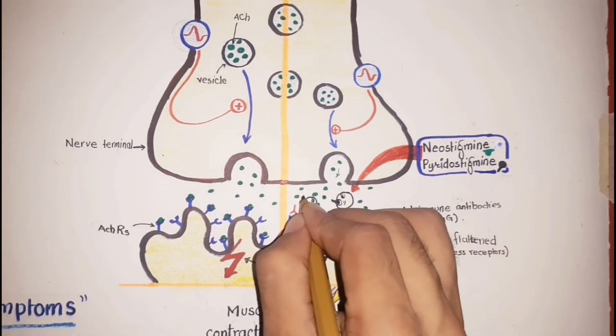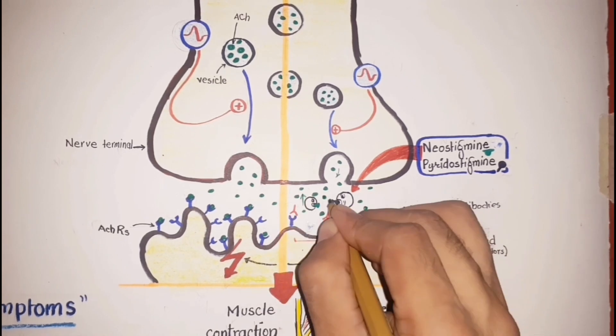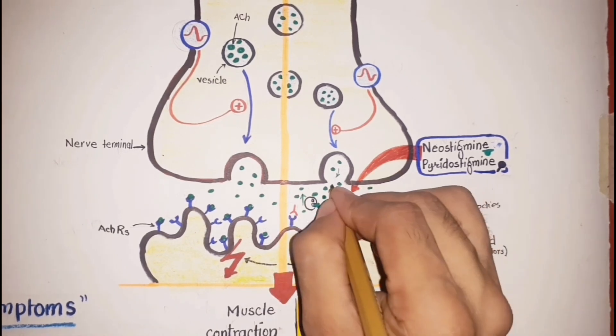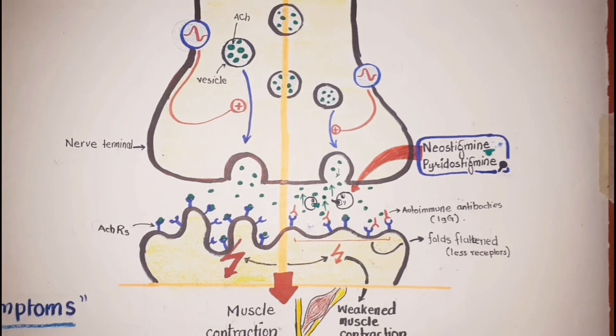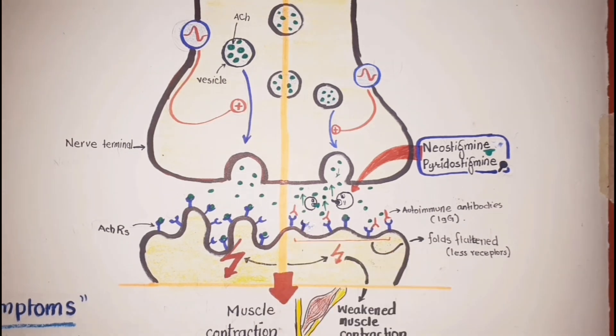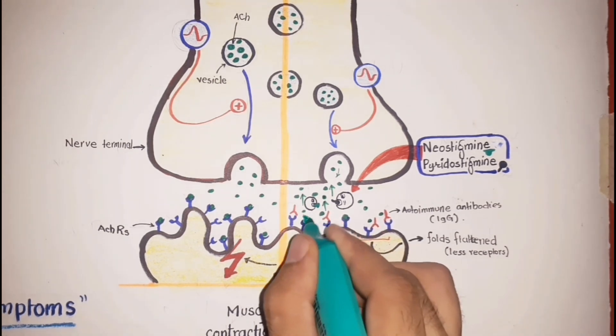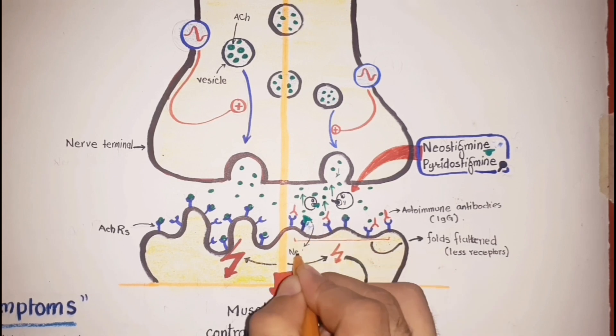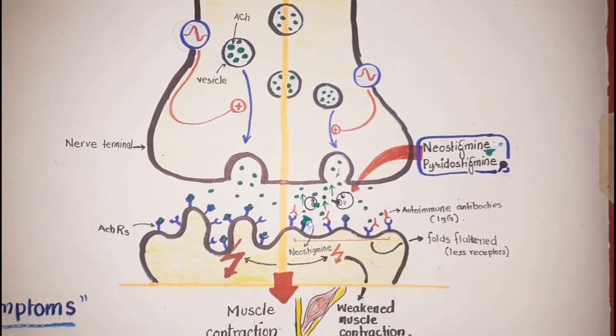By blocking this enzyme, the released acetylcholine accumulates at the site of action for a longer period of time. Besides this, neostigmine also has a direct activating action on the nicotinic acetylcholine receptors.